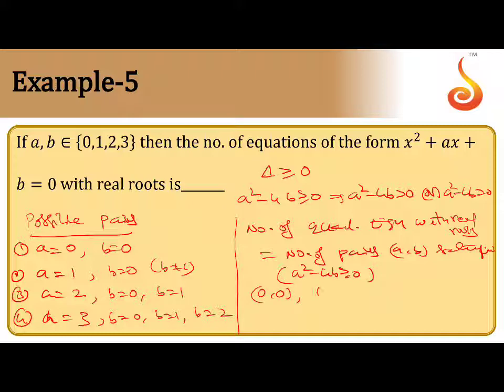That means total possible is (0, 0), (1, 0), (2, 0), (2, 1), (3, 0), (3, 1), (3, 2) also possible. 9 - 8, it's possible. So total 7.